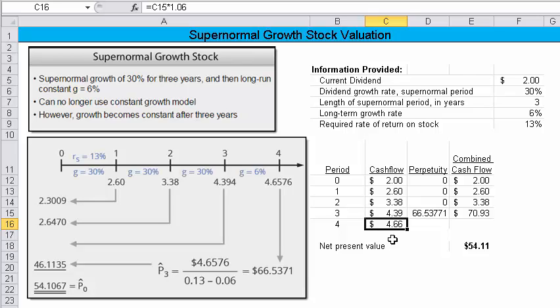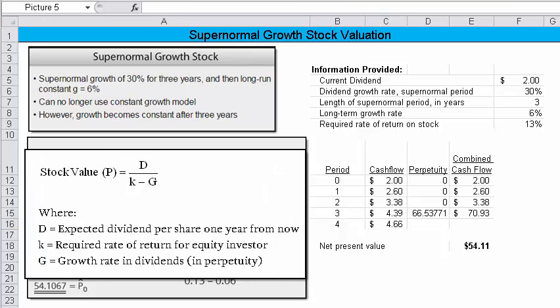All right, now what we want to do is model the correct cash flows. The way you model a perpetuity is you use the Gordon growth model. Now, I've put the Gordon growth model over here.